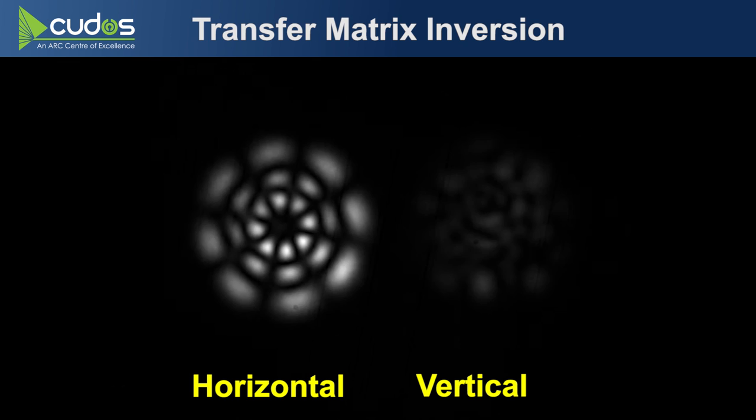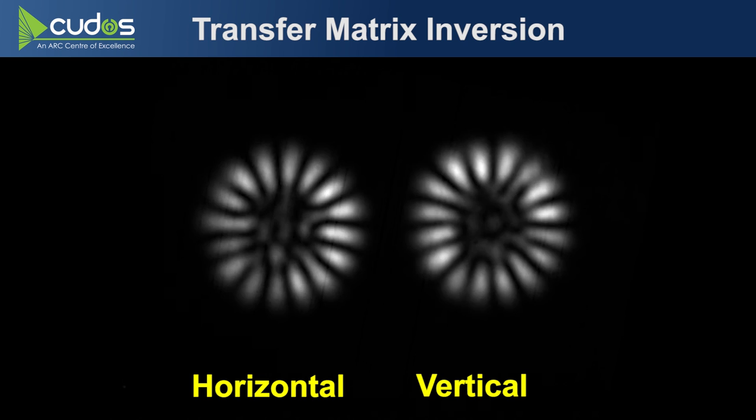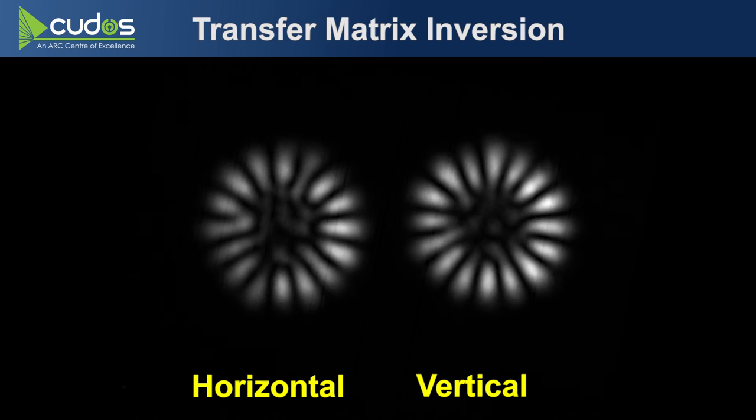The SLM is a dynamic device, obviously, so you can also do other things like make the modes rotate in the desired polarization at the output. Here's another example. We've got the same mode in two different polarizations, spinning in two different directions, one twice as fast as the other.